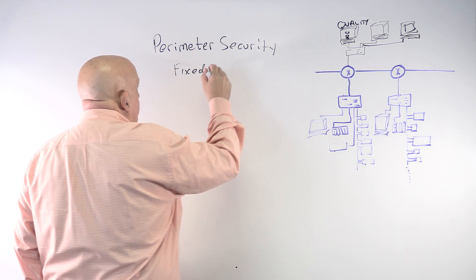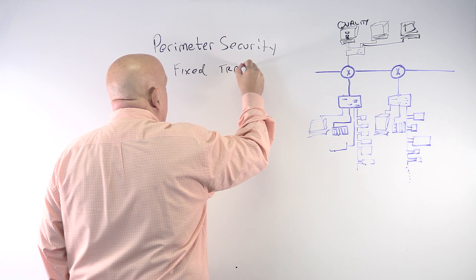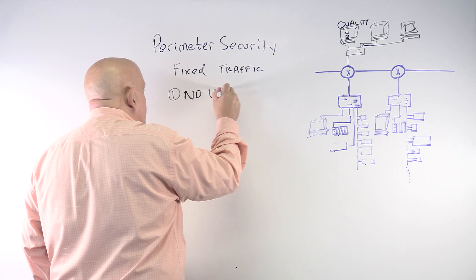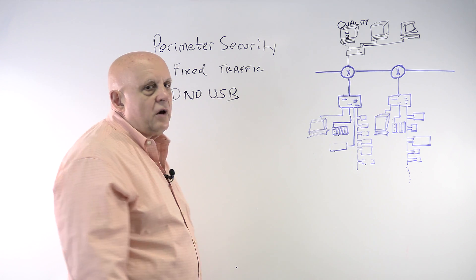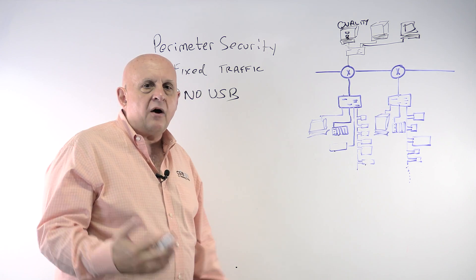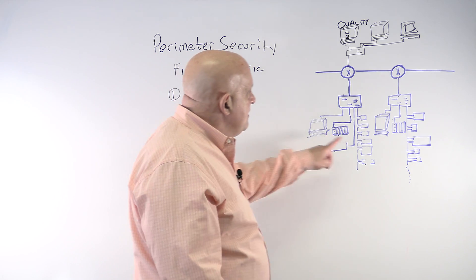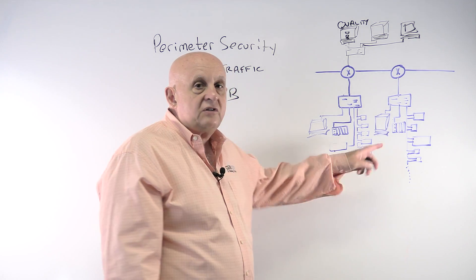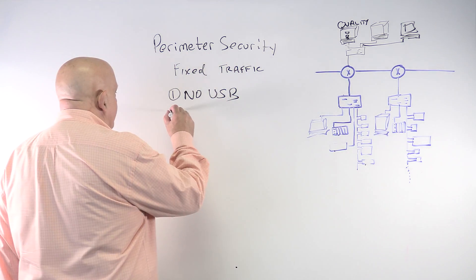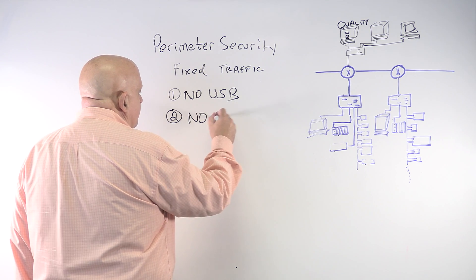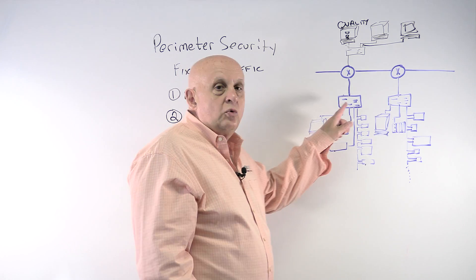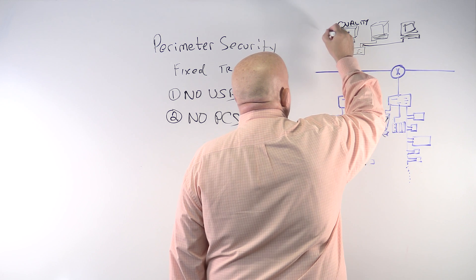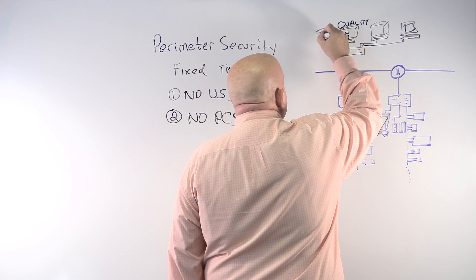There are some requirements we have to put in place before we can actually secure this. First, let's get rid of USB — no USB at all. USB is just a license to bring malware into a system. The easy places to attack a manufacturing system are Windows PCs, Linux PCs, or any PCs on the factory floor. So let's get rid of them — no PCs connected directly to an industrial switch.